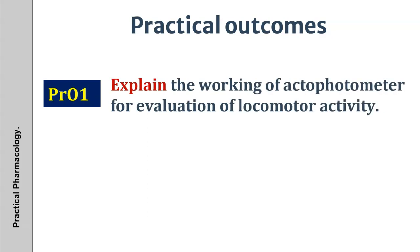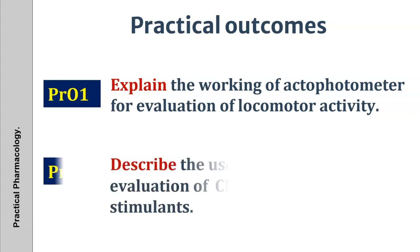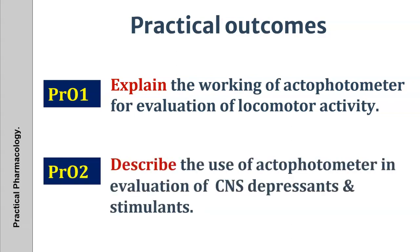Practical outcome number one: explain the working of the actophotometer for the evaluation of locomotor activity — how it works with the help of different parts which are connected to each other, and how we can evaluate the locomotor activity. Practical outcome number two: describe the use of the actophotometer in the evaluation of CNS depression and stimulant drugs.